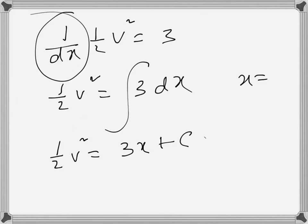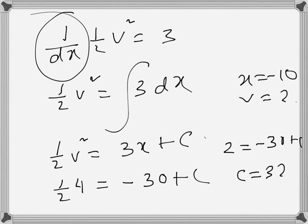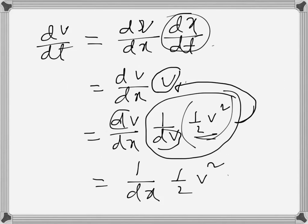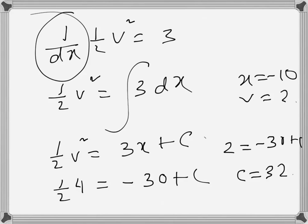So ½(2²) = ½(4) = 2, which equals 3(-10) + C, that's -30 + C. Therefore C = 32.